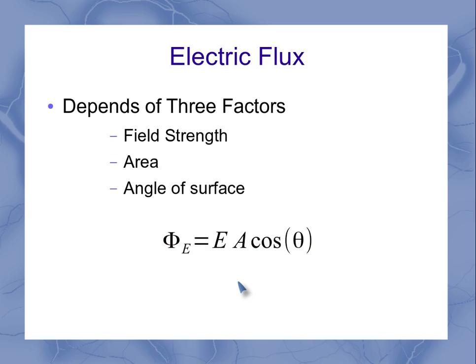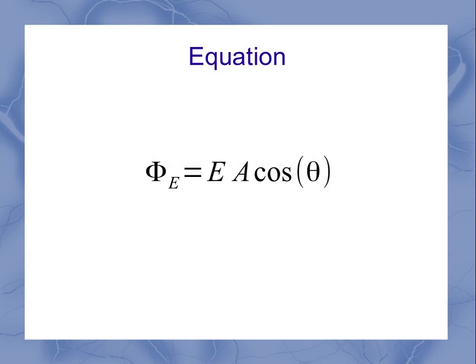Well, I can take these three factors and put them into an equation that looks like this. So let's take a closer look at this equation. Over here on the left hand side I've got the flux, and this is actually the Greek letter Phi. Over on the right hand side, my E stands for the electric field, that A stands for the area, and my theta is the angle, and I'm going to take the cosine of that angle.